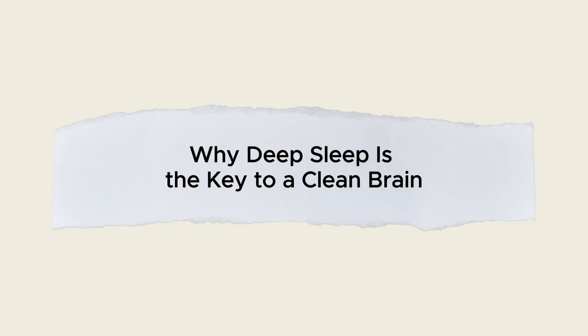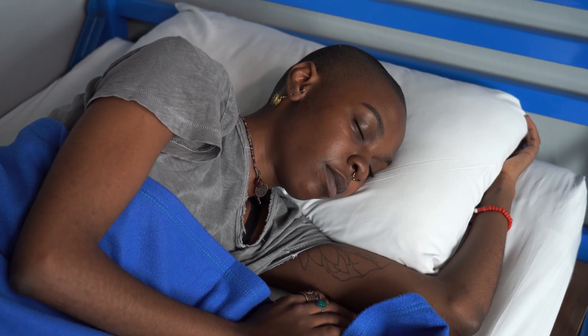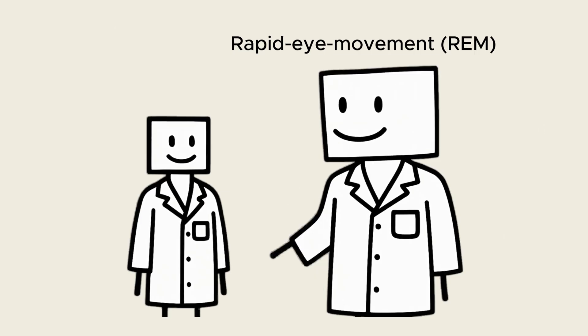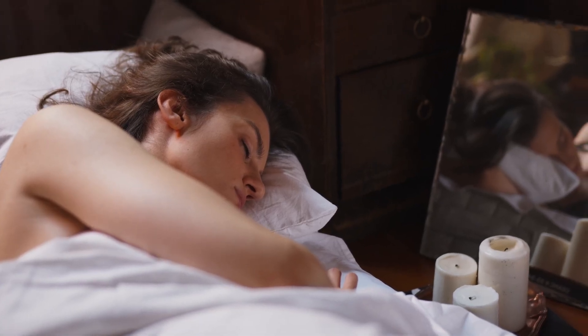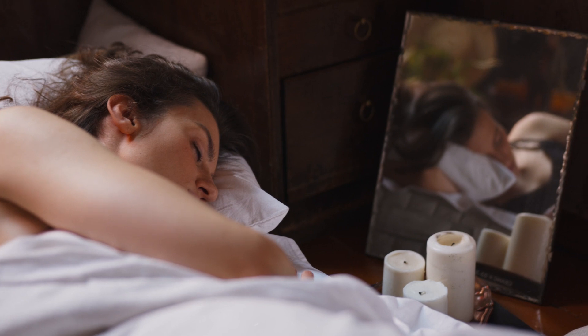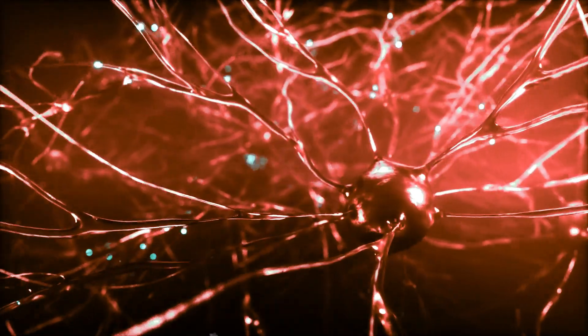Why deep sleep is the key to a clean brain. Not all sleep phases are created equal. Rapid eye movement, REM sleep, is when we dream. But it's deep, non-REM sleep, the slow, rolling waves of stage 3 sleep, that powers your brain's cleaning crew.